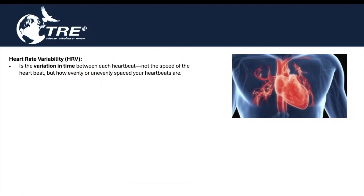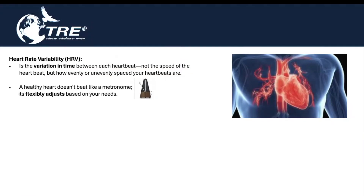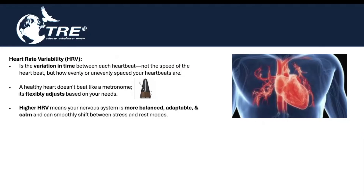When we're measuring heart rate variability, it is the variation in time between each heartbeat — not the speed of the heartbeat, but how evenly or unevenly spaced your heartbeats are. A healthy heart doesn't beat like a metronome; its flexibility adjusts based on your needs. Higher heart rate variability means your nervous system is more balanced, adaptable, and calm, and can smoothly shift between stress and rest modes.